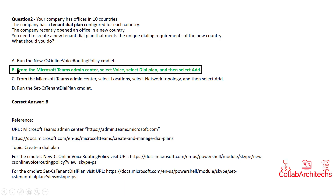The correct answer for this question is B: From the Microsoft Teams admin center, select Voice, select Dial Plan, and then select Add to create a new tenant dial plan. I have provided references where you can log into the Microsoft Teams admin center and explore the Microsoft documentation on how to create and manage dial plans. You can also review the New-CS Online Voice Routing Policy command and the Set-CS Tenant Dial Plan command to understand what each is used for.